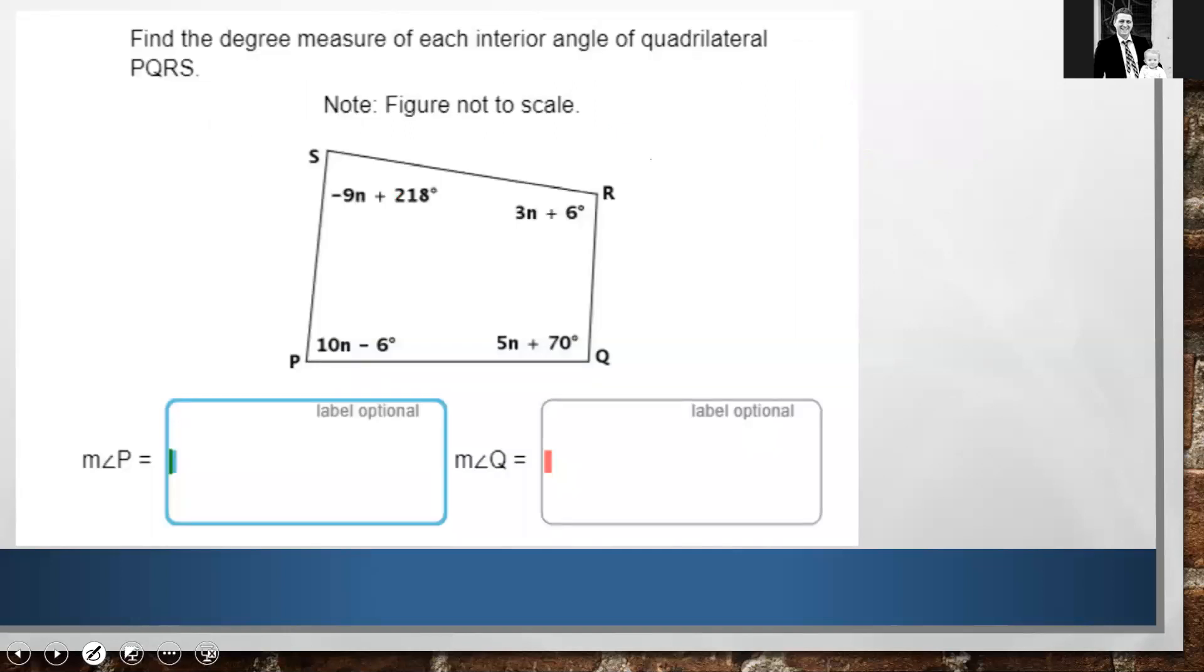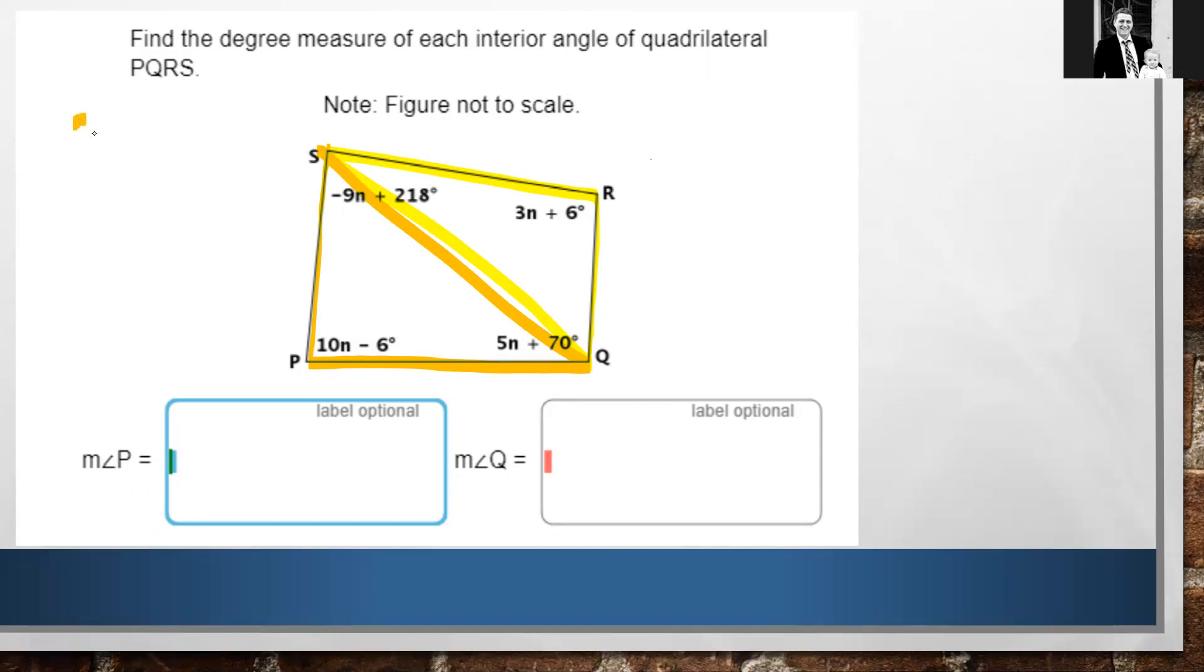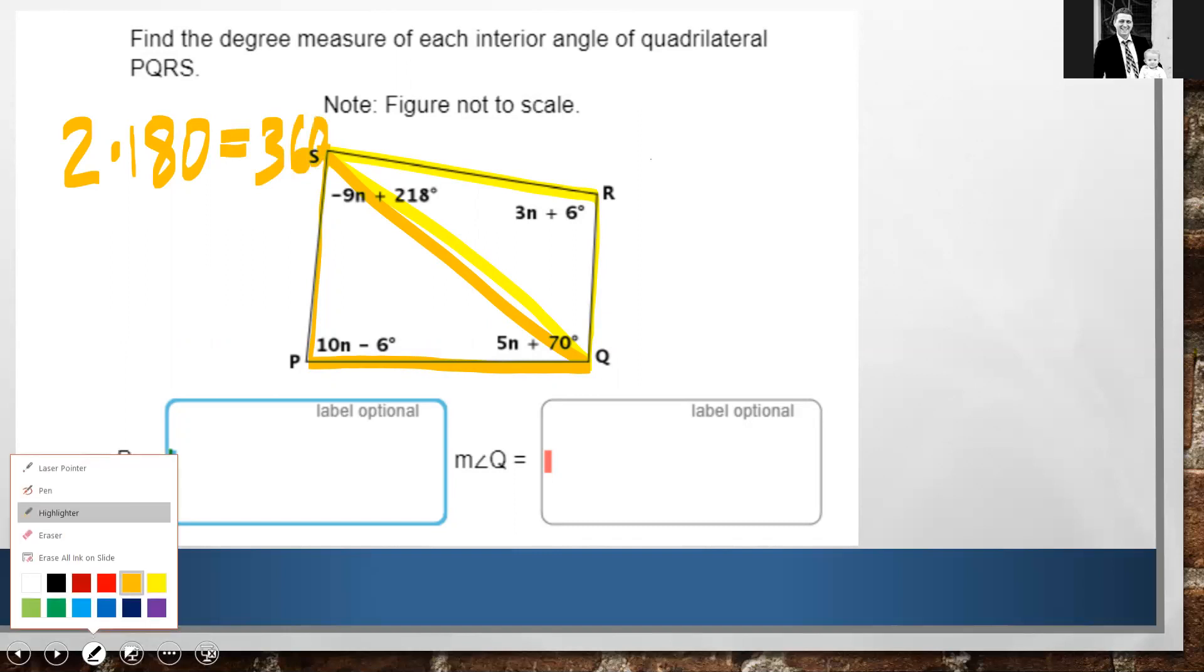Okay, let's look at this one. It says, find the degree measures of each interior angle for the quadrilateral PQRS. Now, if we're not sure what the interior angle sum for this quadrilateral is, then what we need to do is split it up into triangles. I see one triangle here. And I see another triangle here. So I know that this is made up of two triangles. So I'll take that two times 180, and that's going to give me 360. So I know that all of those add up to 360.